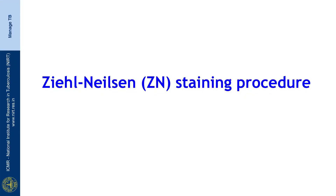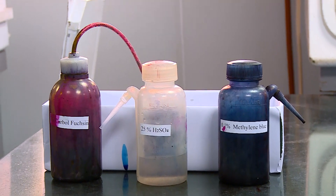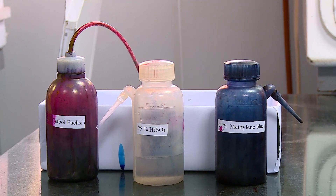We will now see the Ziehl-Neelsen staining method. First, the fixed smear is flooded with filtered carbol fuchsin, which is the primary stain. The slide is heated gently from below until steam arises, and left for about 7 to 10 minutes. The stain is then washed off with water gently. The smear is then flooded with 25% sulfuric acid for about 45 to 60 seconds, washed with water, then flooded with methylene blue and left for 45 seconds. After washing, it is allowed to dry. A drop of liquid paraffin is placed on the smear and it is seen under the oil immersion objective. The 3 staining solutions are 1% carbol fuchsin, 25% sulfuric acid, and 0.1% methylene blue.